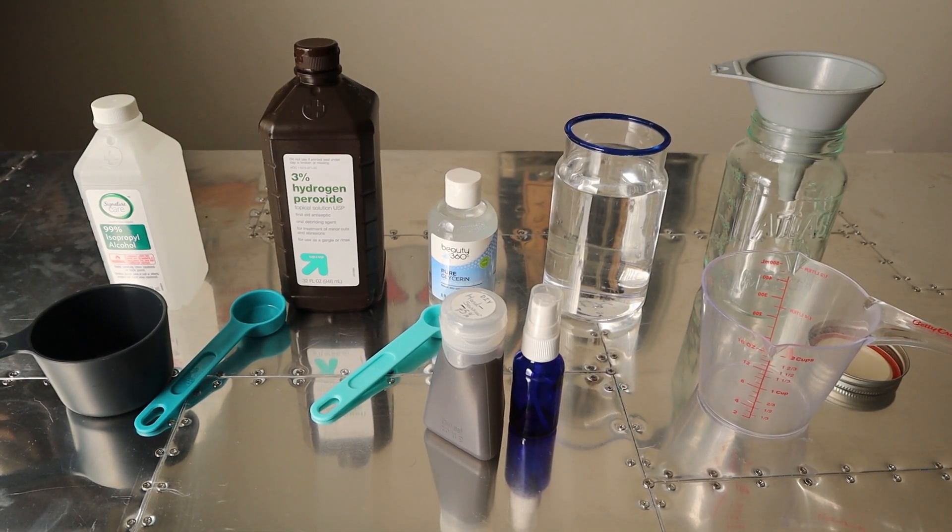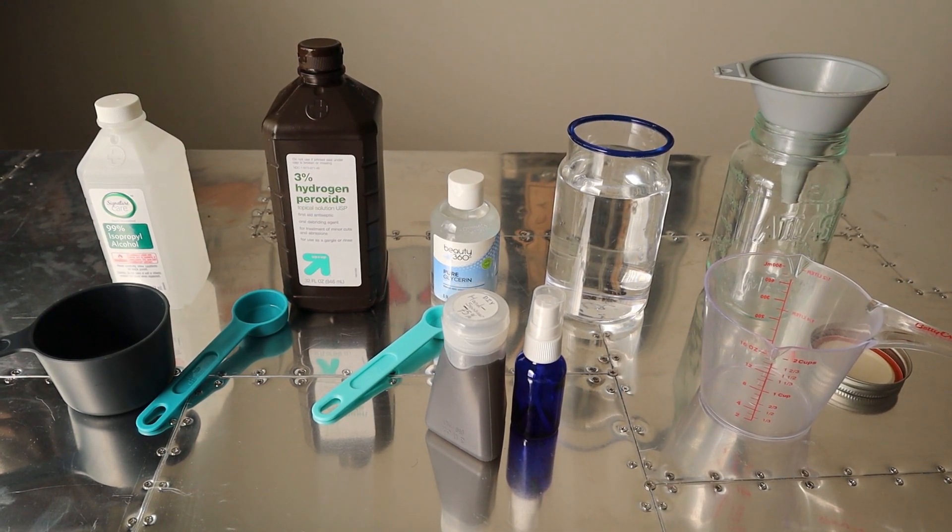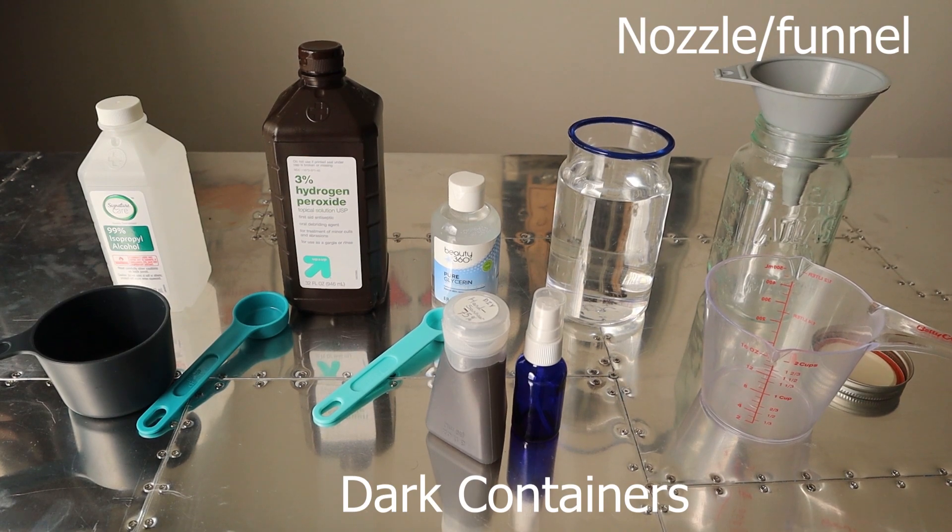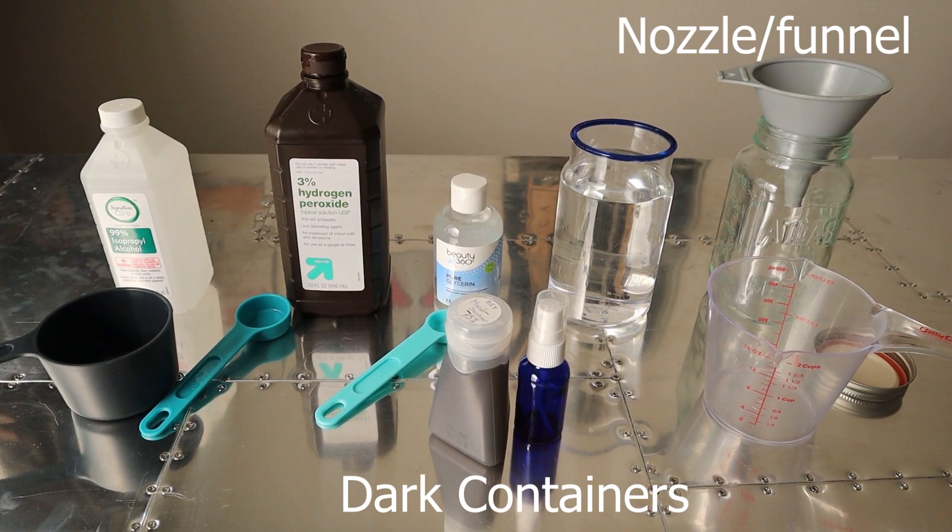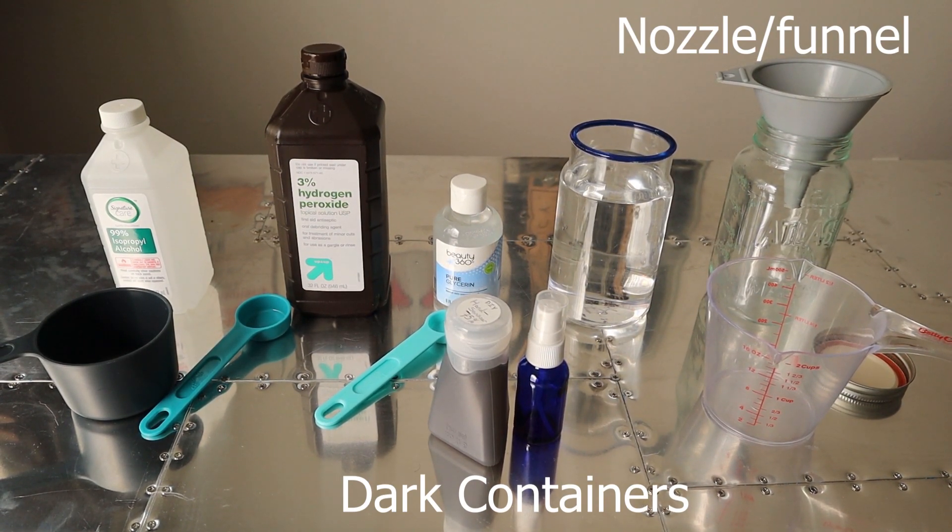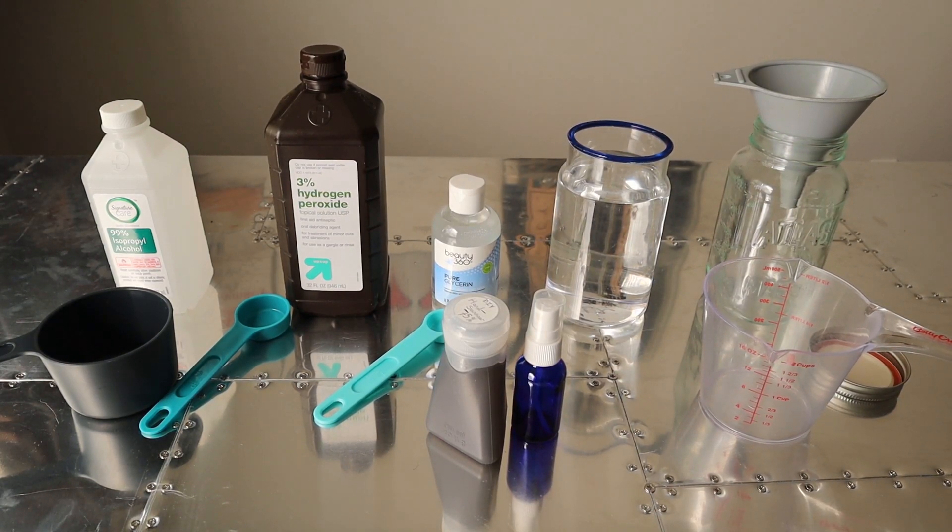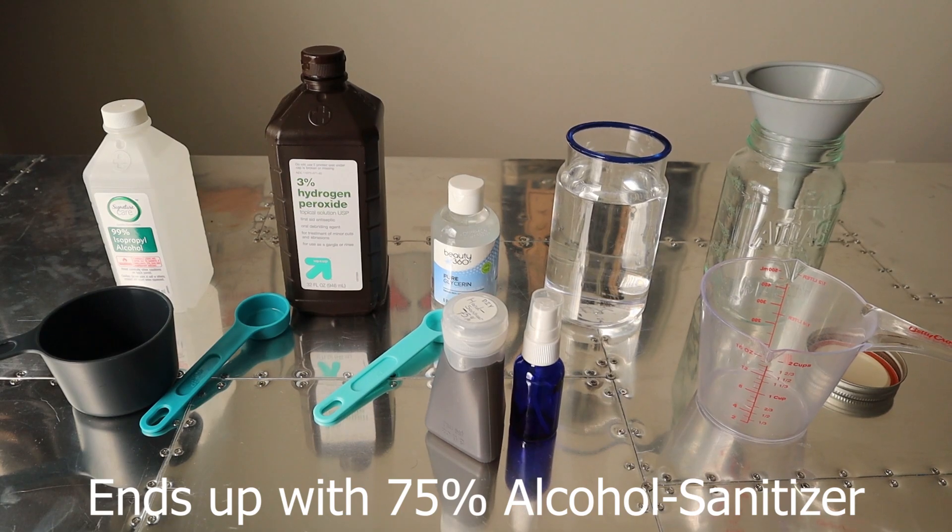So first things first, you want to have all your supplies ready: your ingredients, your measuring devices, a nozzle, and a dark dispensing container. You could use a travel size one too that has a spray. This method looks at a 1 in 1 third cup home-scaled version that's ready for use so you can start using your hand sanitizer today.